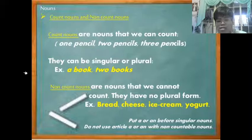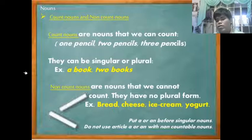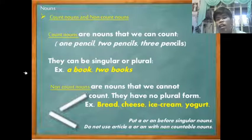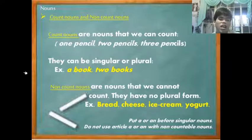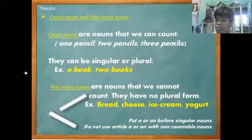Next are count nouns and non-count nouns. Count nouns are nouns that we can count — for example: one pencil, two pencils, three pencils; one book, two books. Non-count nouns, as the name suggests, are nouns that cannot be counted or are very hard to count.